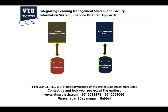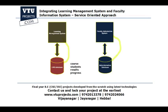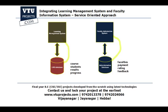The Learning Management System accesses a database called the LMS database, and the Faculty Information System accesses a different database called the administrative database. The LMS database will most probably have all the course details, student details, results details, and progress details. The administrative database will have details about each faculty — their payment details, ratings, feedback, and all administrative data.